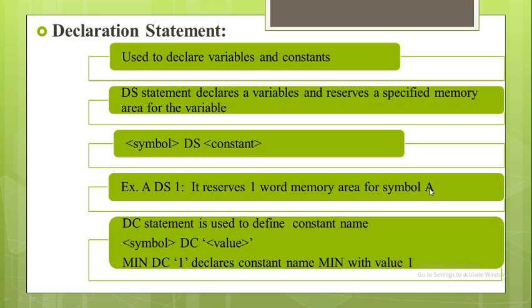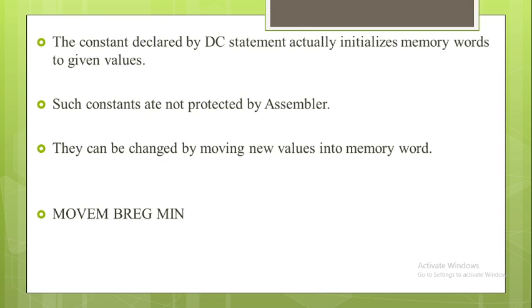The DC statement is used to define a constant name. The format is: symbol DC followed by the value in single quotes. For example, MINIMUM DC '1' declares the constant name MINIMUM with the value 1. The constant declared by DC statement actually initializes memory words to given values.